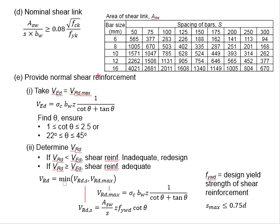Therefore, ultimately, we are supposed to check with this equation. Taking this as VED, substitute all the relevant numbers into the equation. We can determine ASW per S. This represents the amount of shear reinforcement bar.